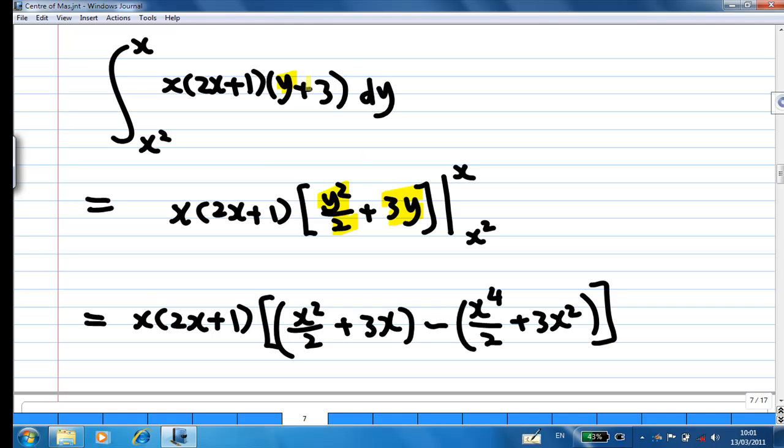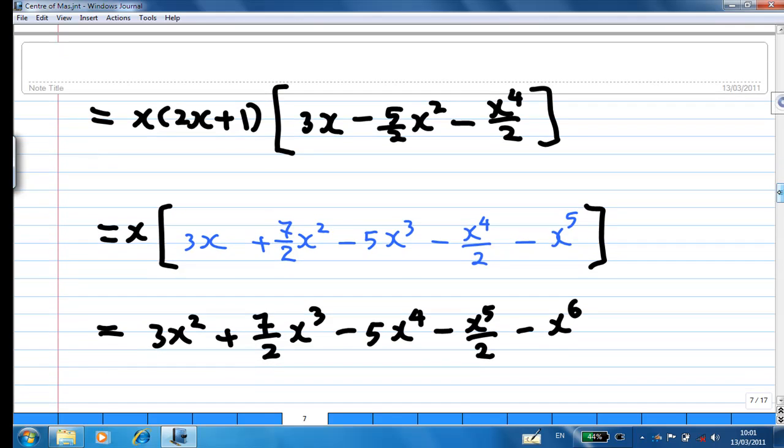Put the limit inside for y equal to x, I get the first term. And then put the limit for y equal to x squared, then I get the second term and find the difference. So the inner integral is 3x² plus 7x³/2 minus x⁴ minus x⁵/2 minus x⁶ after I expand the product.